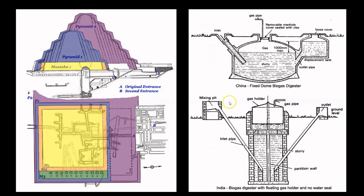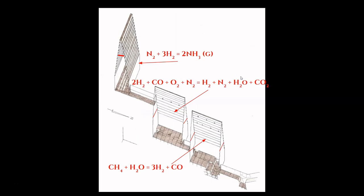In the previous episode, I explained that one application for the methane being produced inside the Steppe Pyramid was syngas, or synthesis gas, for the production of other industrial chemicals like methanol, formaldehyde, and most importantly, ammonia. I have gone into great depth here on the channel discussing exactly how the Red Pyramid was producing ammonia and putting to rest the fallacious argument that the overwhelming smell of ammonia and the black staining in the upper vaults of these chambers was produced by bats.